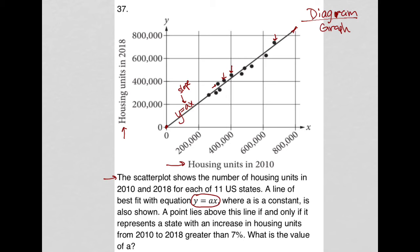The hint is with regard to the points that lie above the line. If you lie above the line, there had to have been a greater than 7% increase in housing units. Here's the deal — if y equaled just x, or in this case a would equal one, that would mean there was a one-to-one ratio between housing units in 2018 and 2010, which practically means they were flat with no growth. The same number of housing units in 2010 equals the same number in 2018. Each of those states would be on the line if our slope was just one.